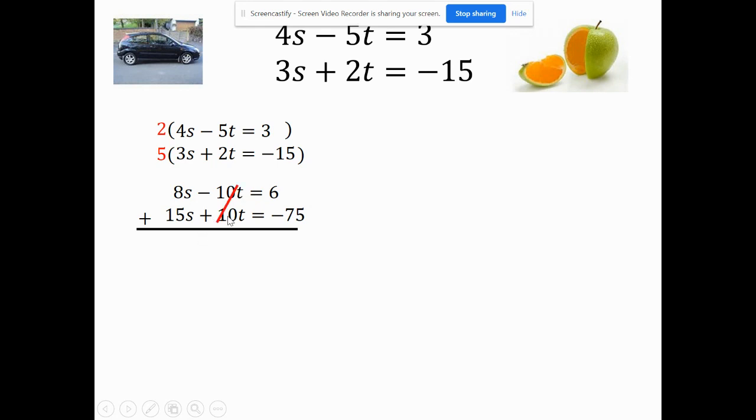And by doing that, these will cancel out. 8 and 15 makes 23s. 6 and negative 75 makes negative 69. And now I'm going to have a little continental divide sign show up here because I know I need to divide these. I'm going to divide them by 23 because I have 23s. So I divide by 23. I should have said Michael Jordan, that was his number. And so s equals negative 3.